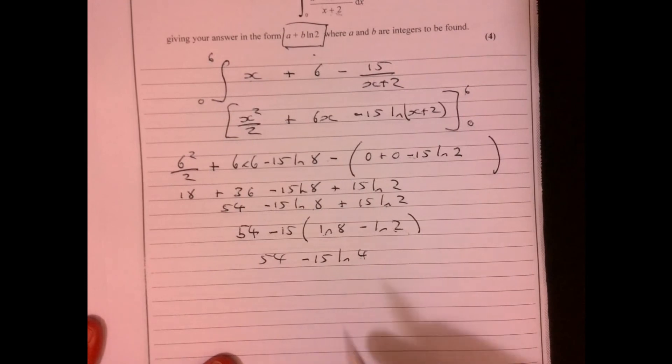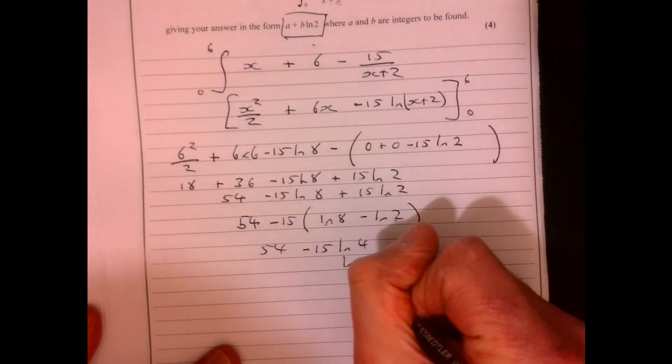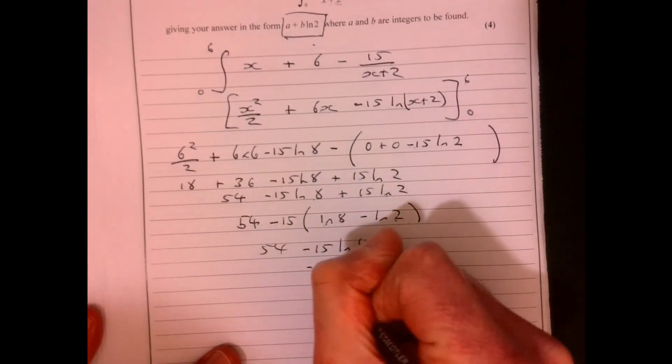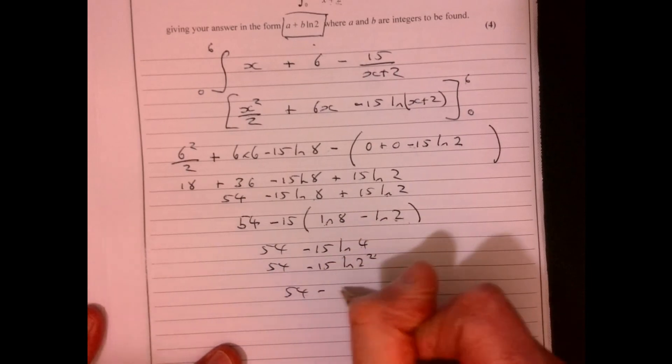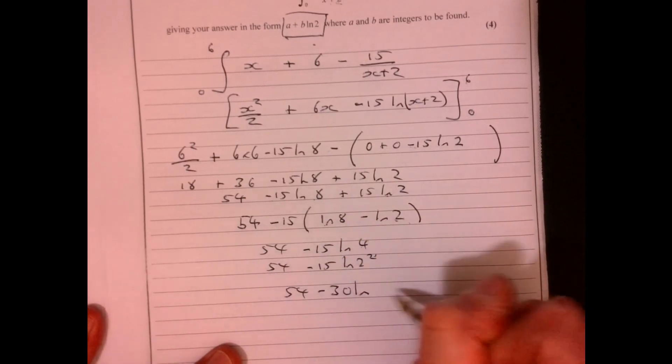What's 4? 4 is 2 squared, isn't it? 4 is 2 squared. Think of your log laws. That 2 can now come outside, it's not quite at the front. So the answer, get it in the right format.